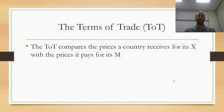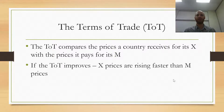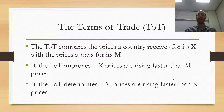The terms of trade is a concept that compares the prices a country receives for its exports with the prices it pays for its imports. If the terms of trade improves, that means that export prices for a country are rising faster than import prices. But if the terms of trade deteriorates, import prices are rising faster than export prices. This is how the concept operates.